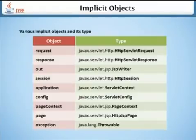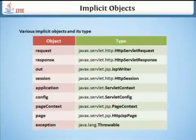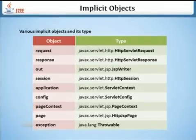These are the various implicit objects and their types: Request, Response, Out, Session, Application, Config, PageContext, Page, and Exception.